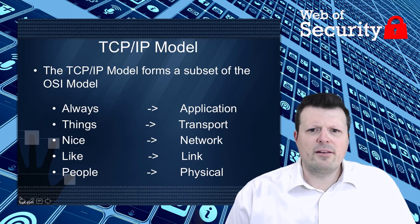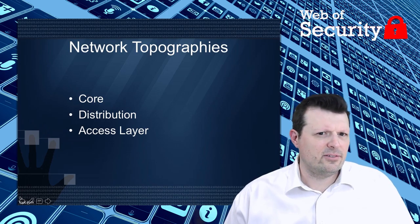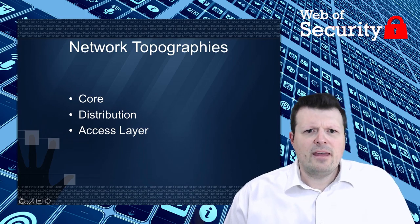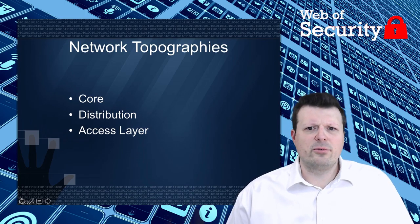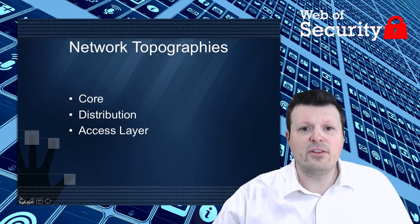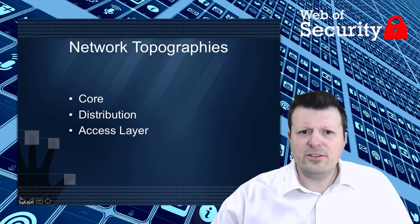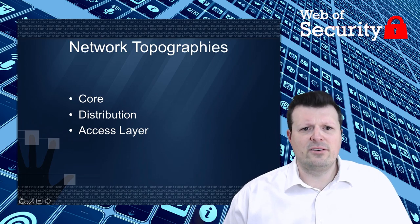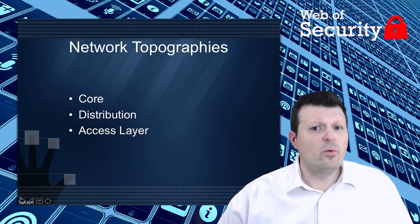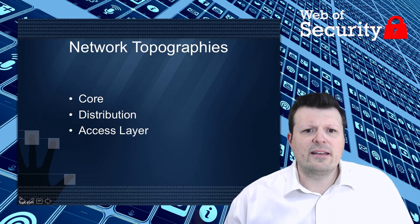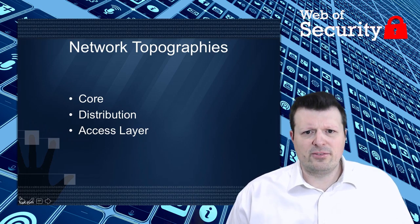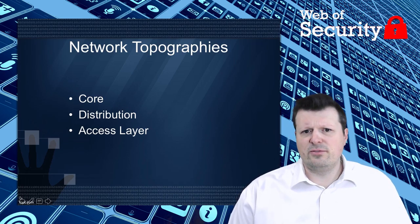Modern network topographies consist of core, distribution, and access layers. The core layer is a switching layer that moves data quickly in a LAN environment. Hanging off of the core switches you typically have routers which segment IP networks. Within those networks you have VLANs that partition off broadcast domains, and you also have wireless access points connected to the routers, which function at the access layer as well. In contrast, WANs or Wide Area Networks connect these types of topologies over the internet and are often depicted as clouds, as the networks crossed include various third-party networks such as telecom providers.